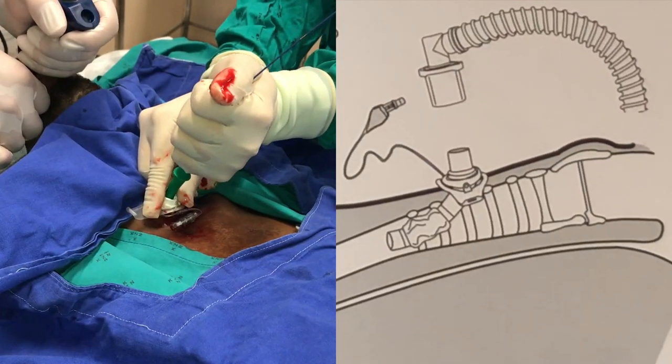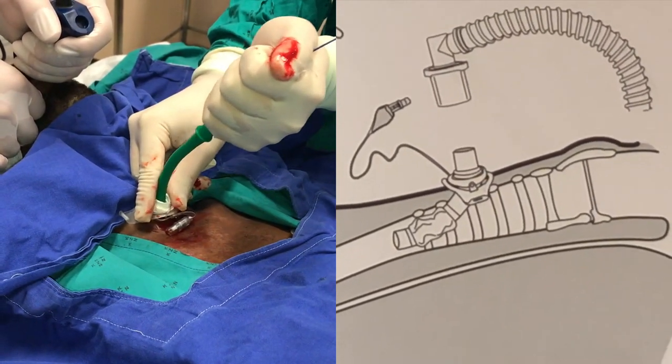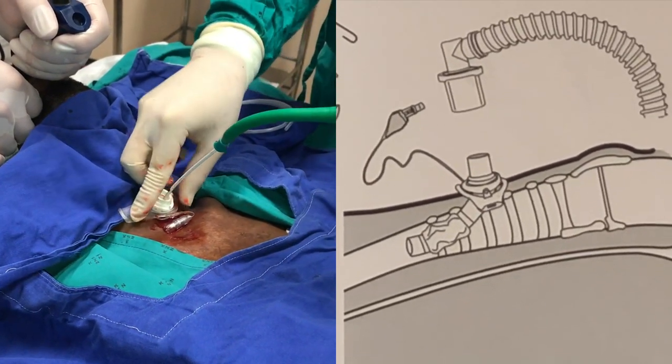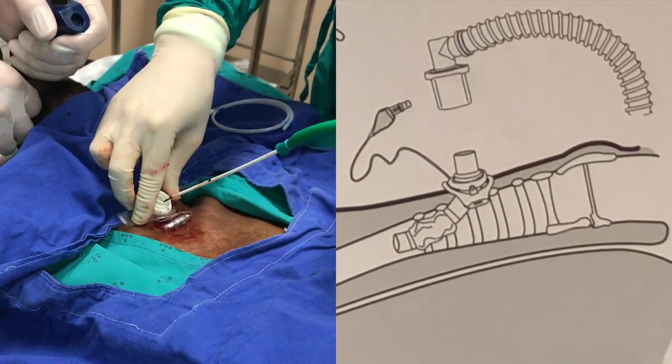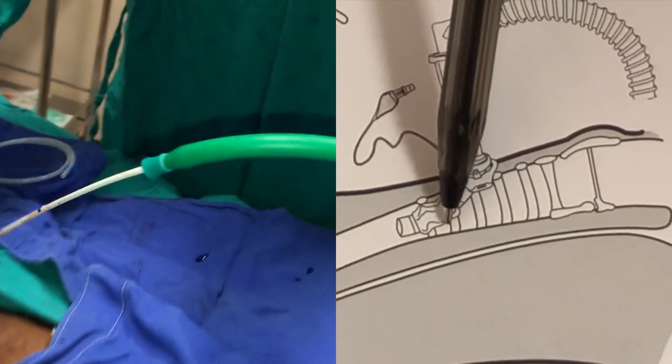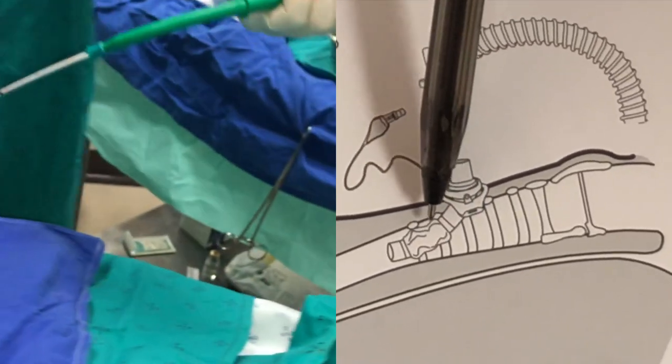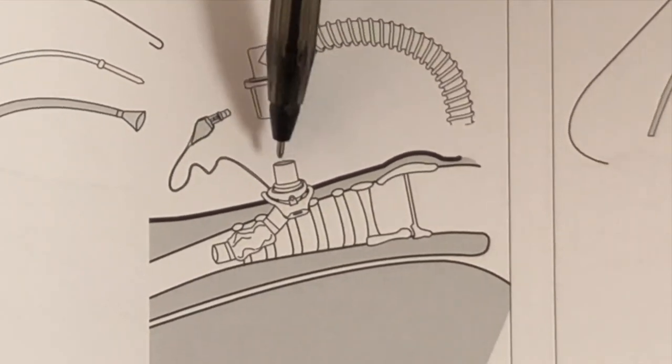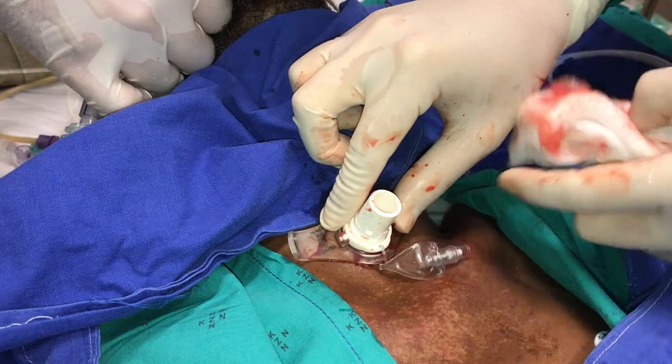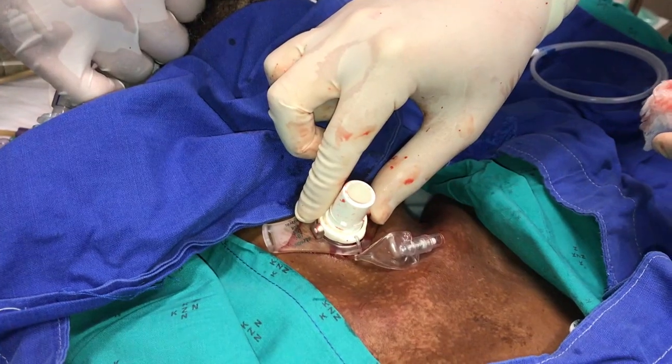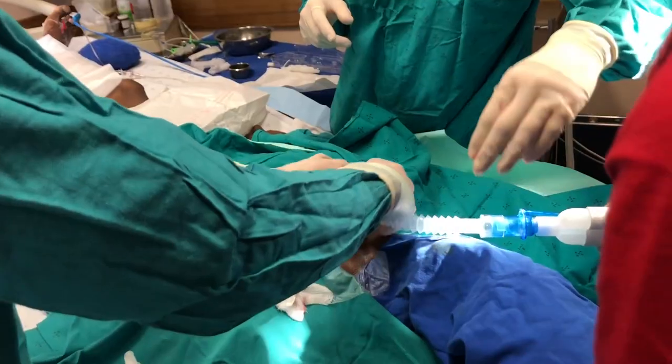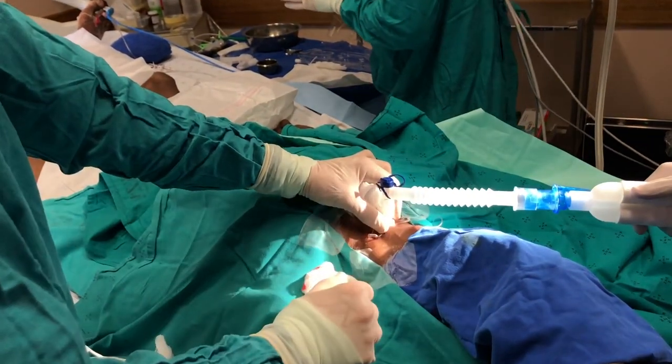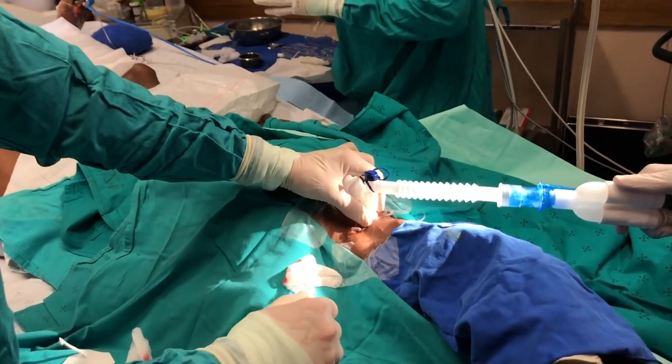Pull out together the green tracheostomy introducer, the guide wire protector, and the guide wire. I find it useful to prior to doing that inflate the cuff to give myself a little bit of security. Having removed those, inflate the cuff if you haven't already done that. Put the inner tube into the tracheostomy and lock it. Attach a sterile catheter mount to a ventilator. Confirm ventilation by chest rise and the return of CO2 on the capnograph.